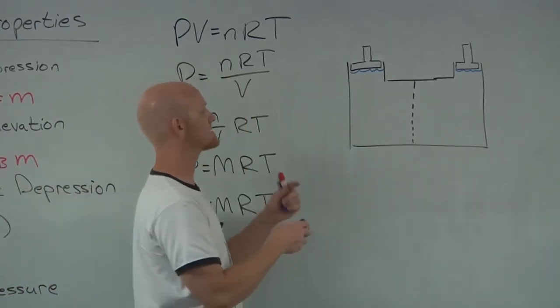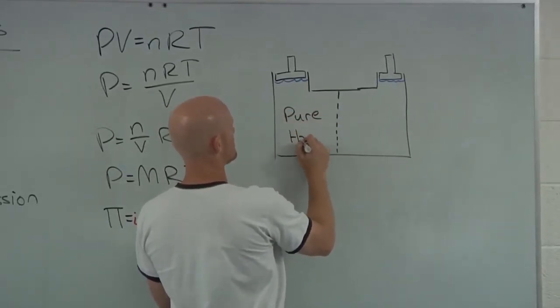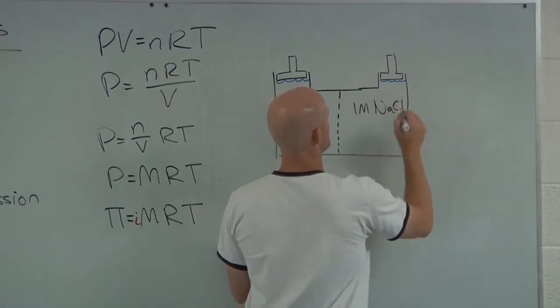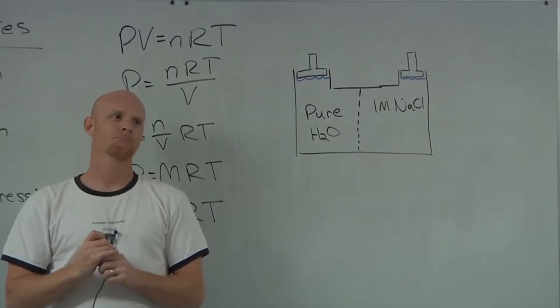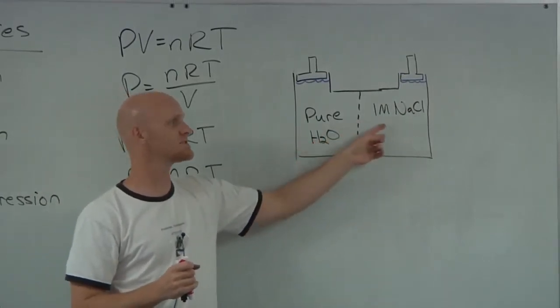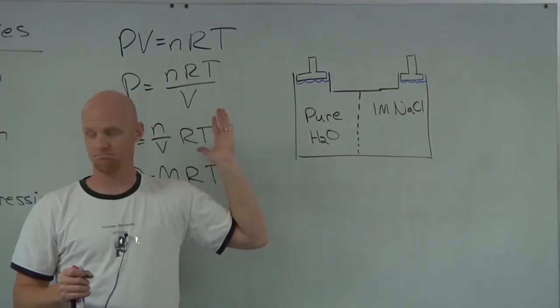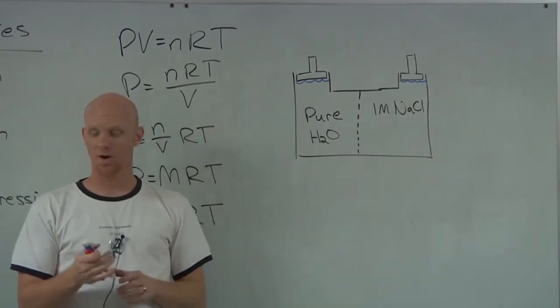And so in this case, let's say I put pure water on one side, and then I put one molar sodium chloride on the other side. Because there's a difference in concentration in water here, water needs to move. Osmosis is going to occur. It wants to move. Which way does water want to move?